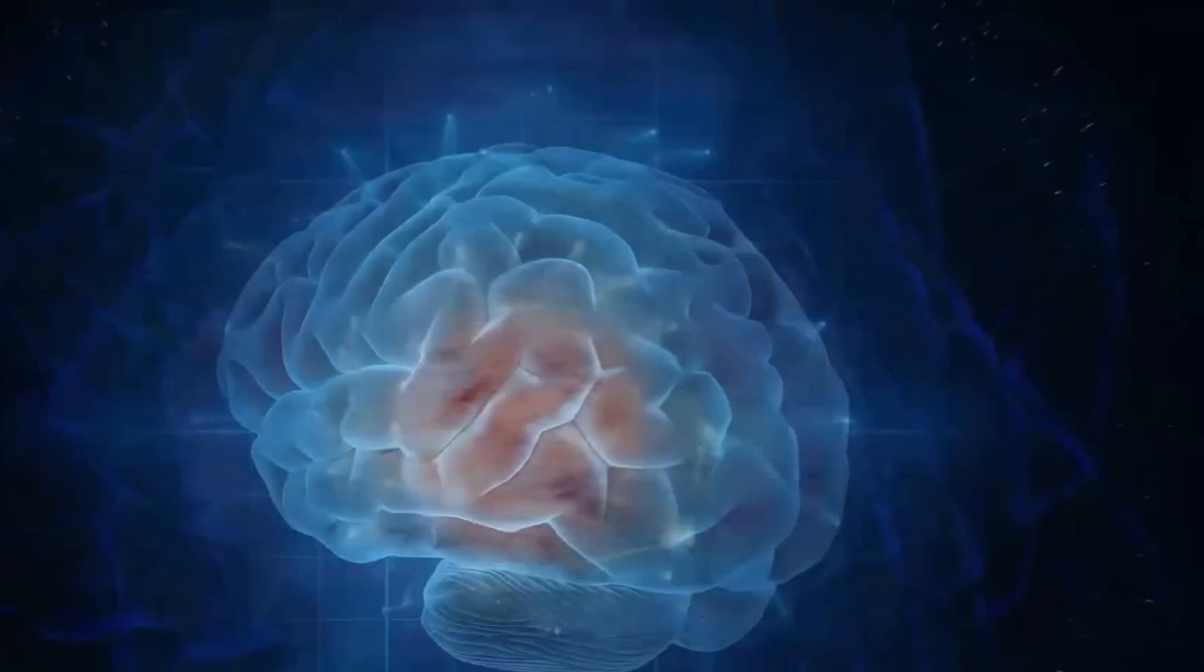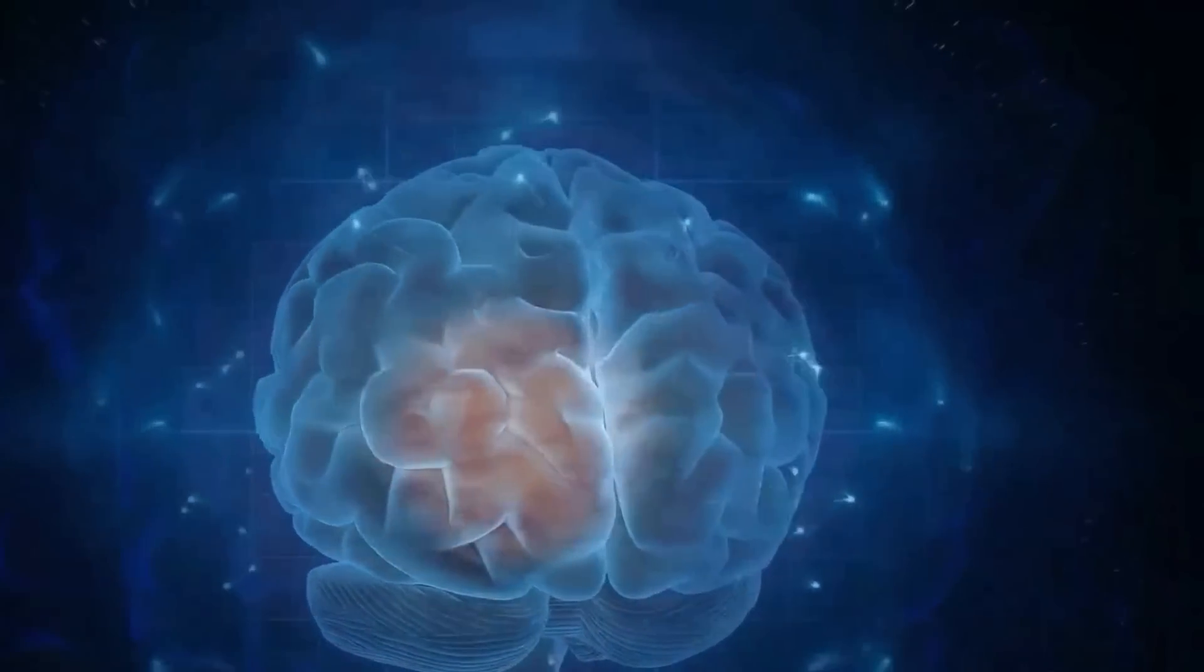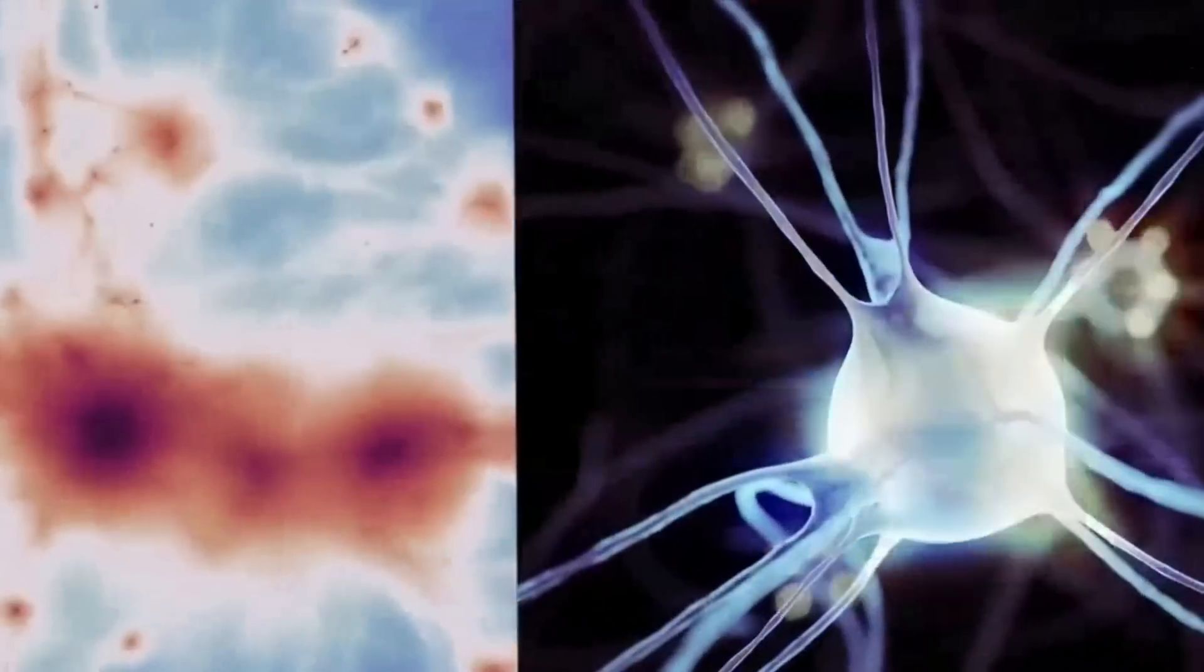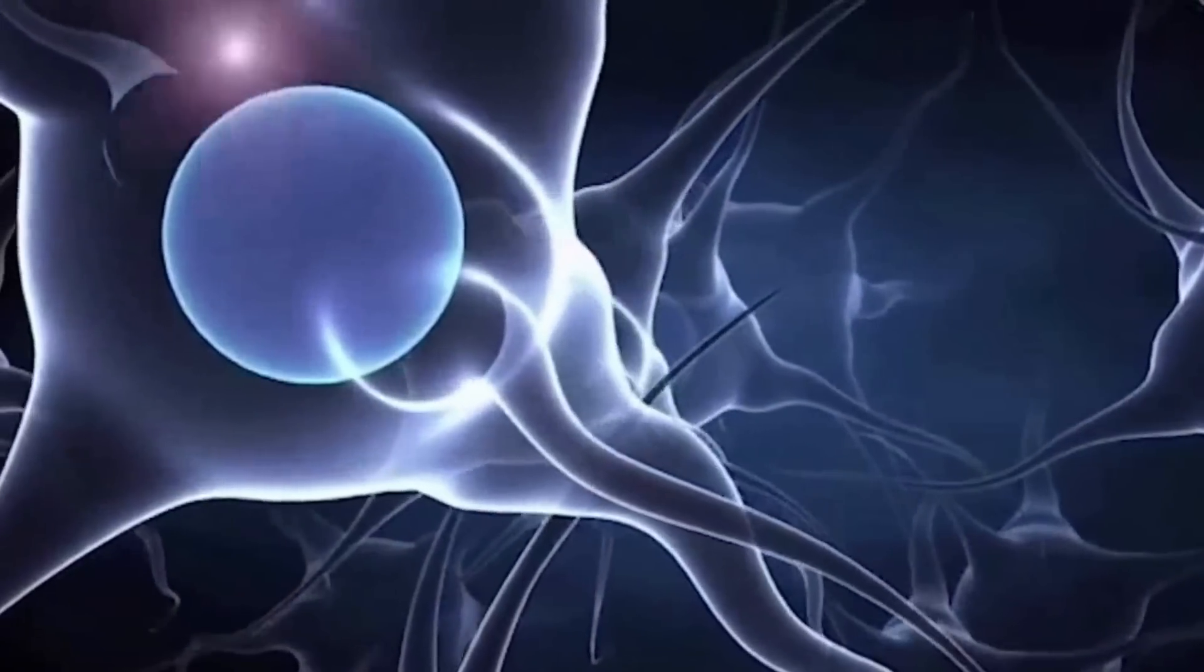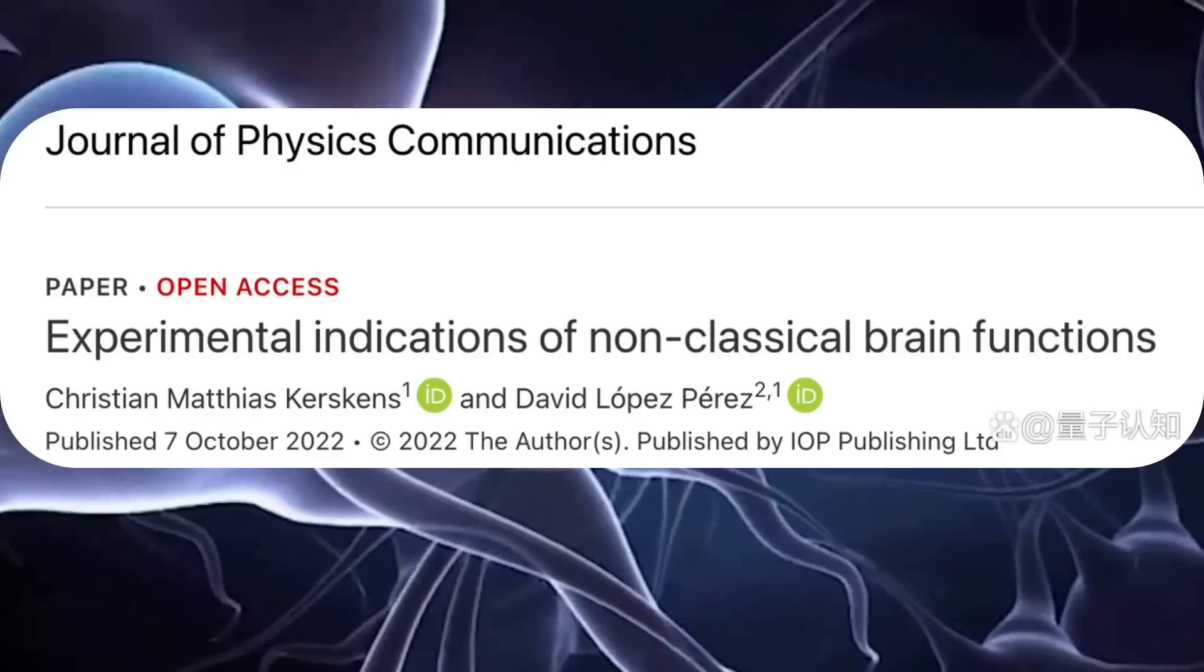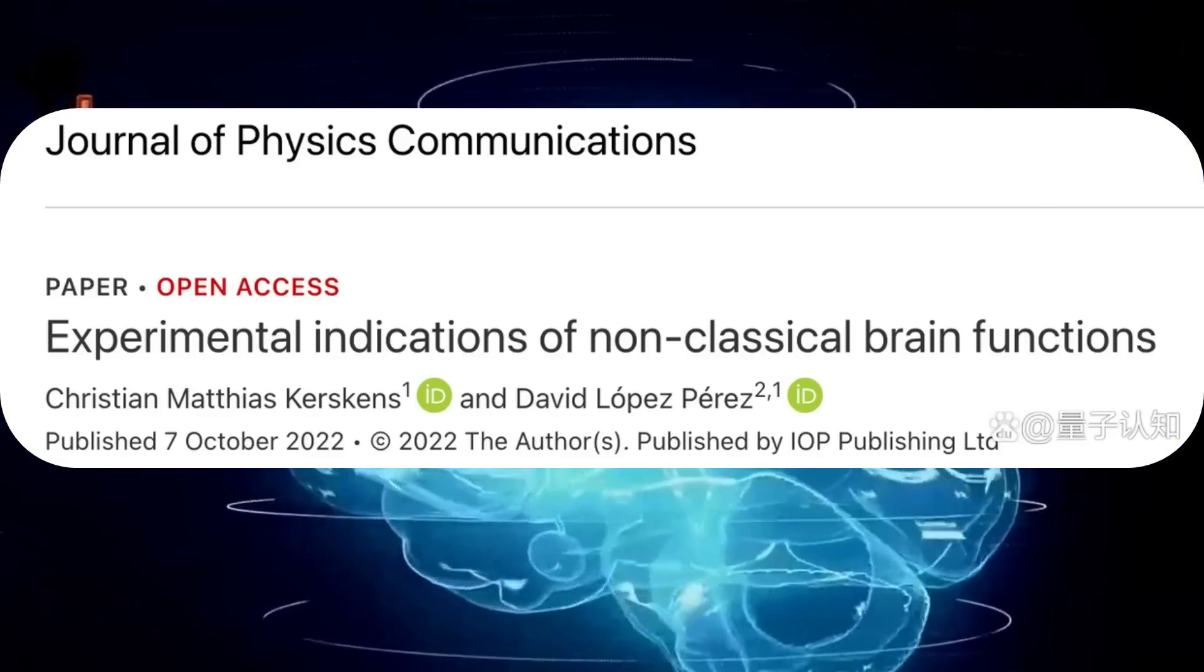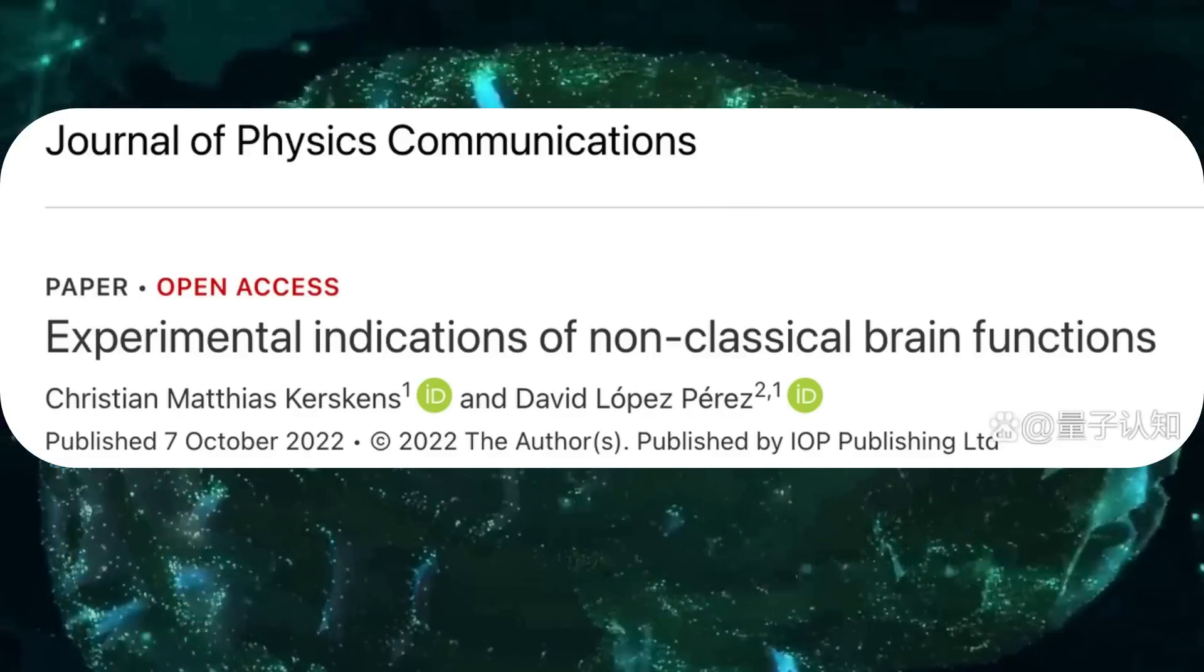Some scientists in the past have suggested that quantum processes, including entanglement, may help explain the vast capabilities of the brain and its consciousness. Recently, scientists at Trinity College Dublin have suggested that entanglement may be at play in our brains through testing the technology of quantum gravity.